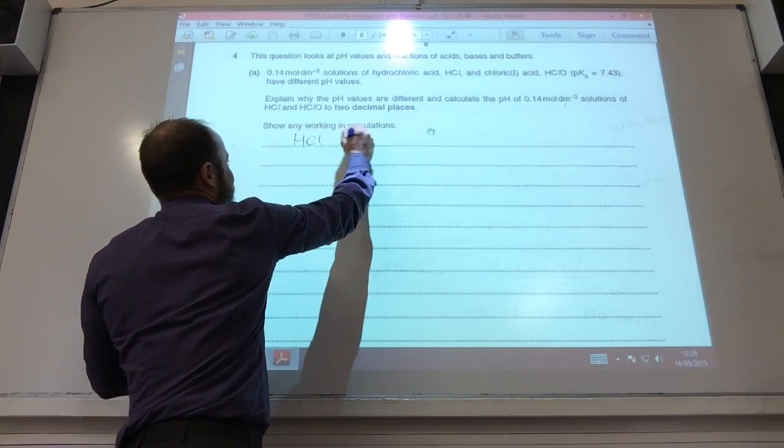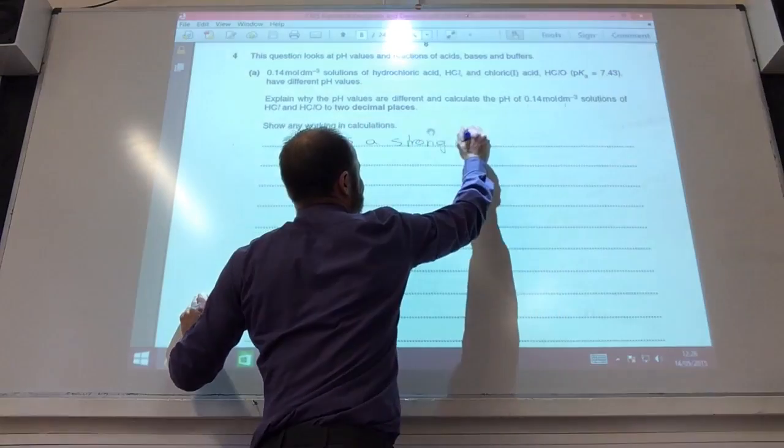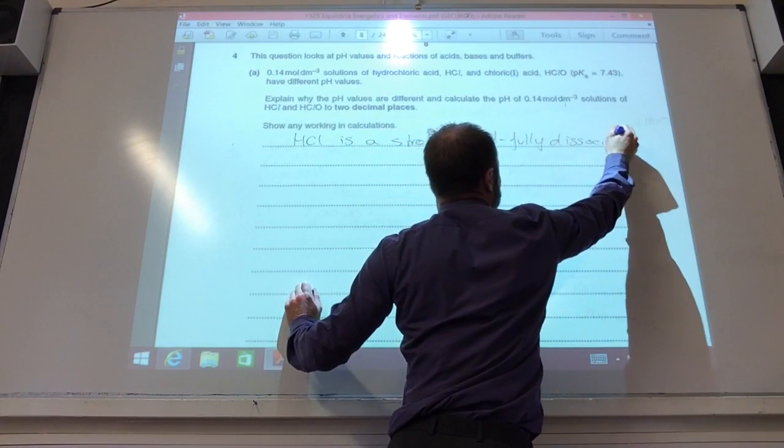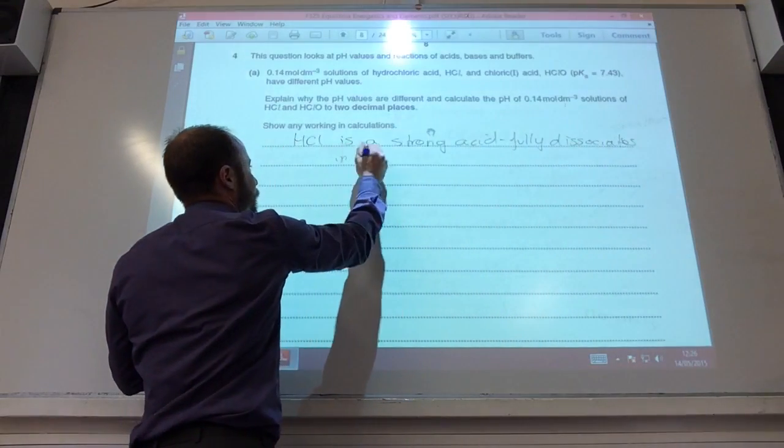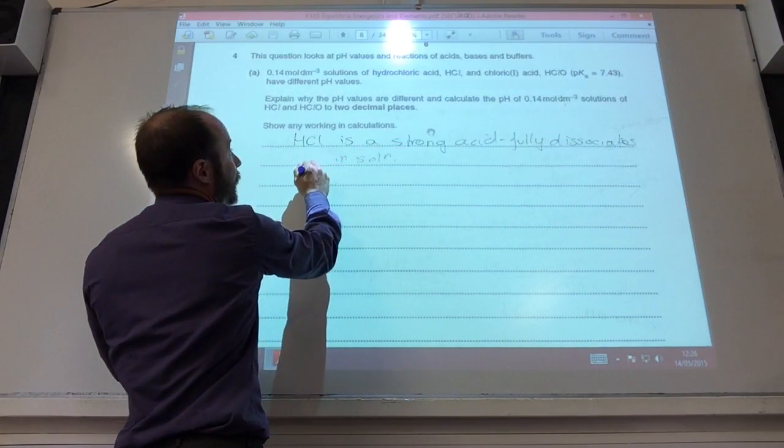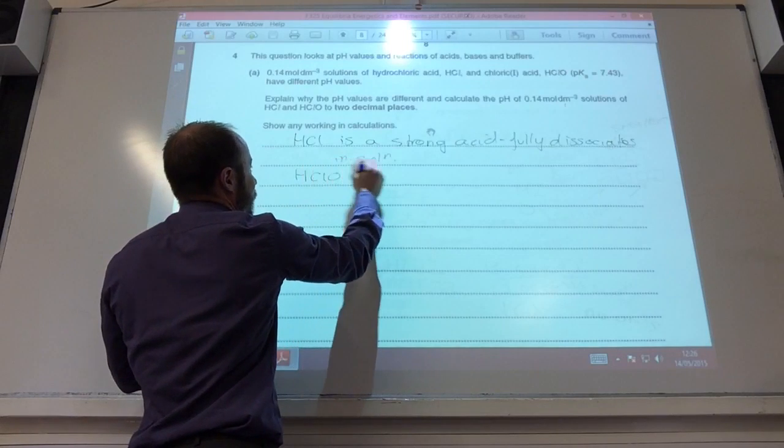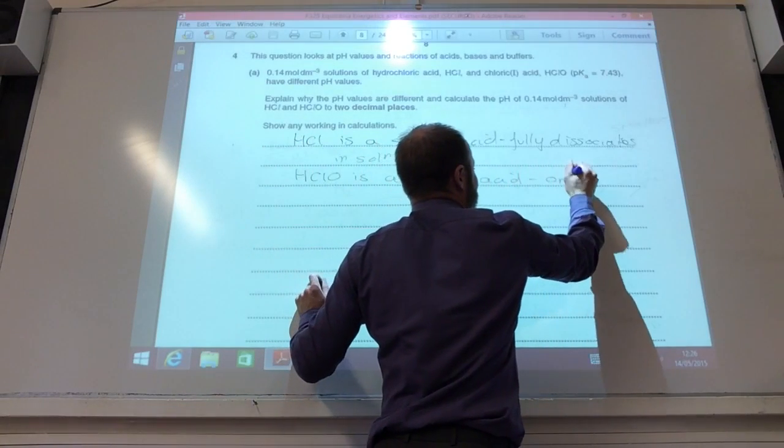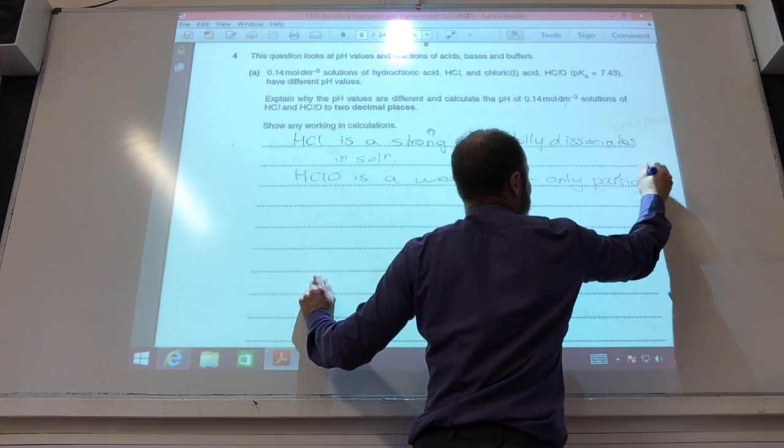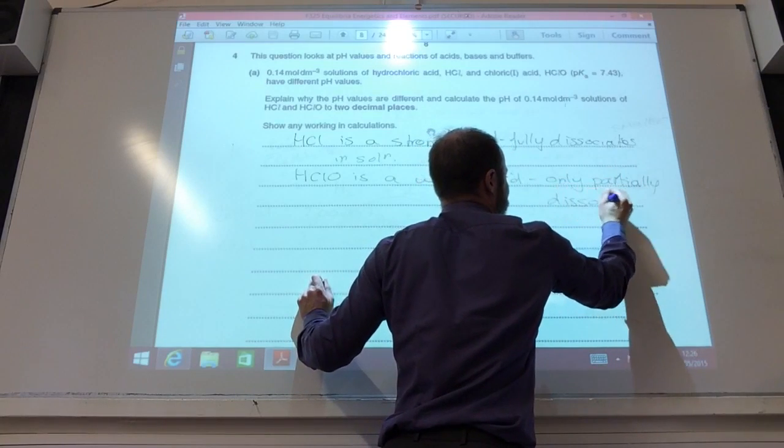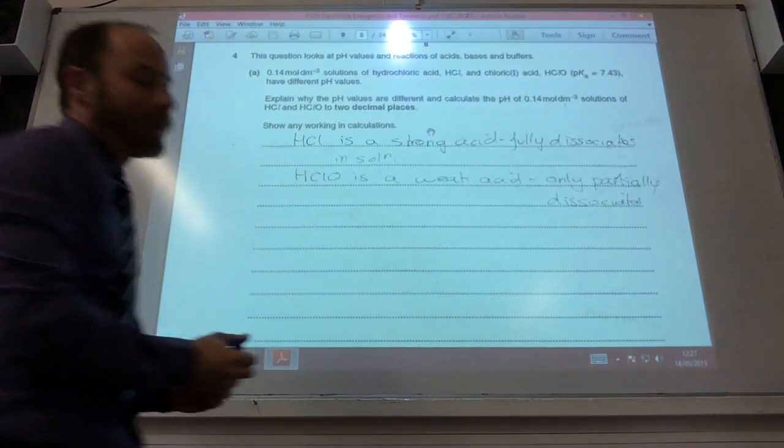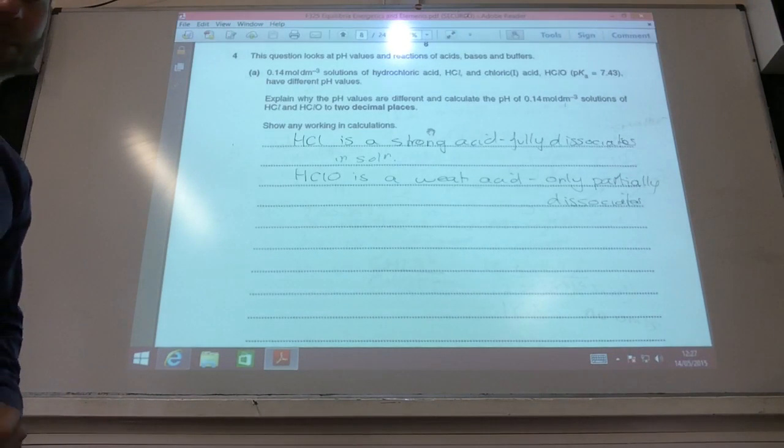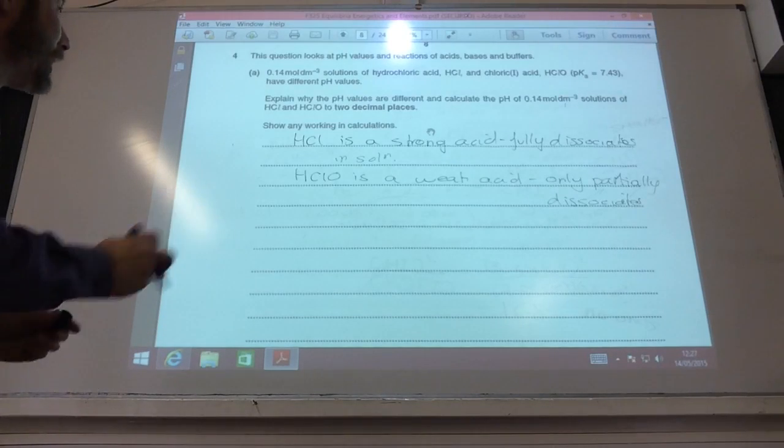The first thing we need to say: HCl is a strong acid that fully dissociates in solution. However, chloric acid is a weak acid and only partially dissociates in solution. So that's why they're different. Right, how can I now calculate the pHs at those two different concentrations?